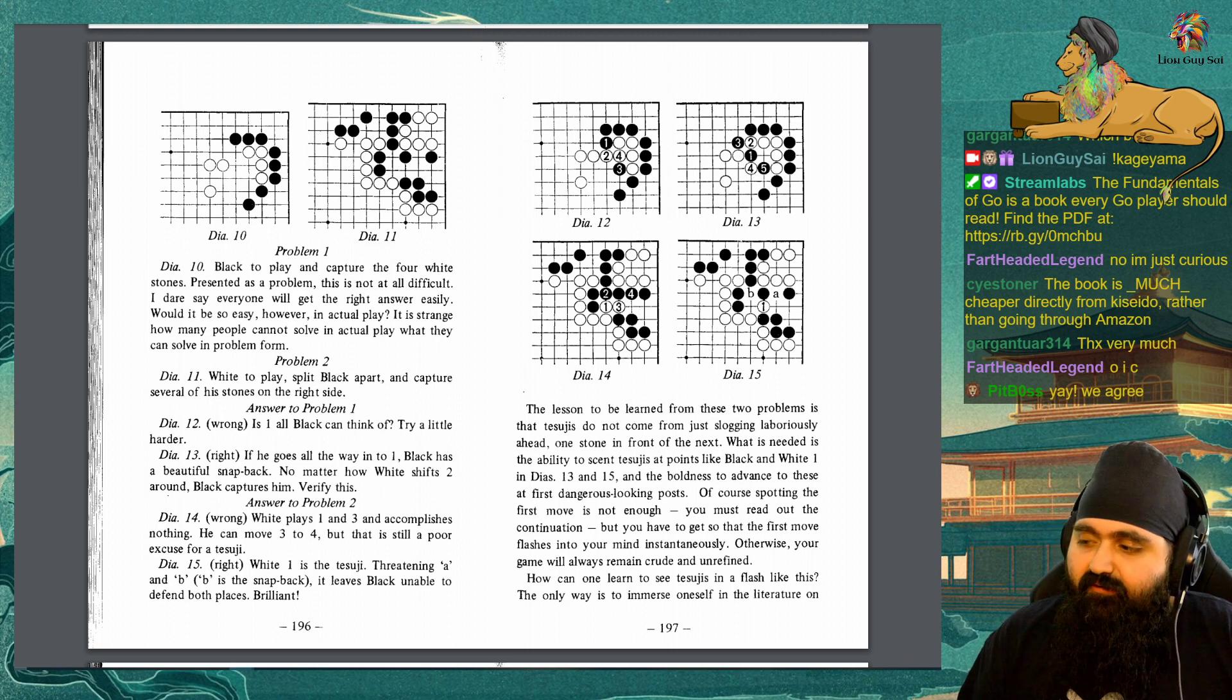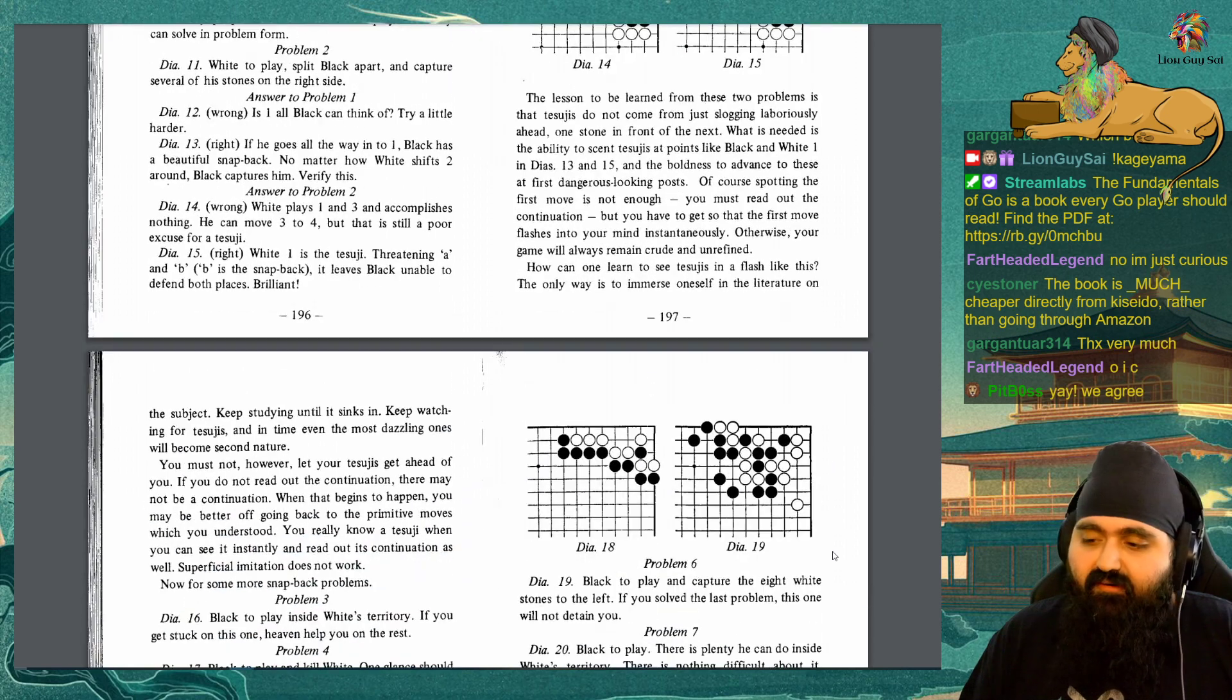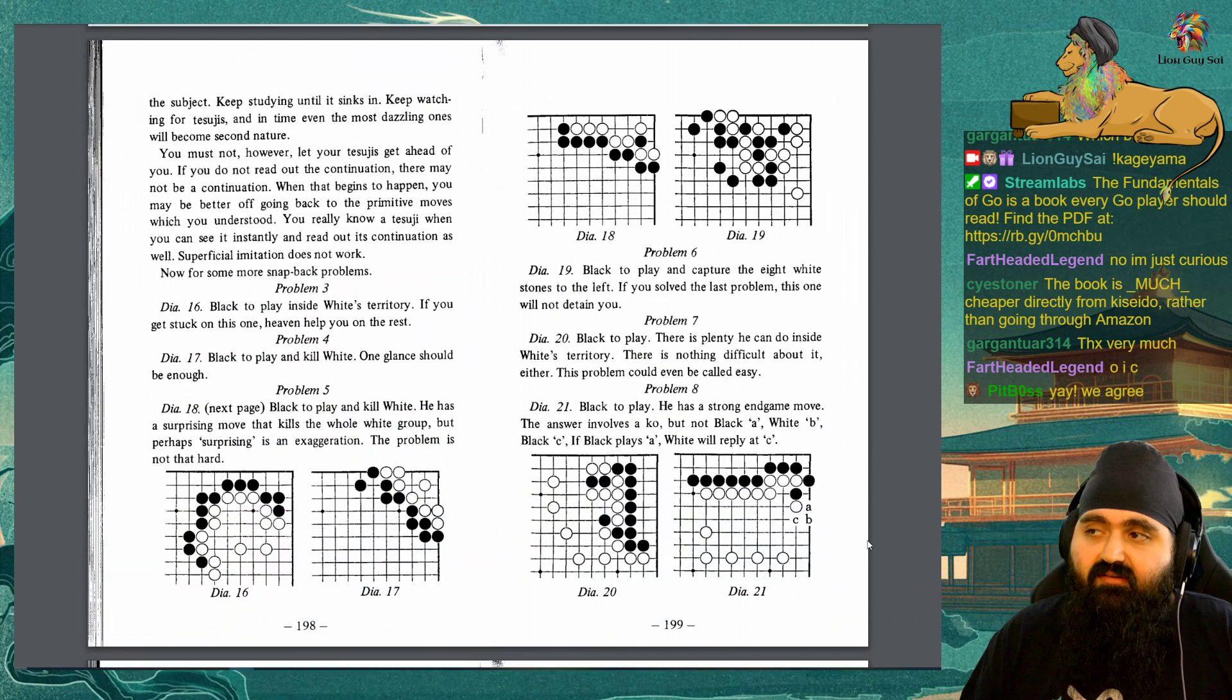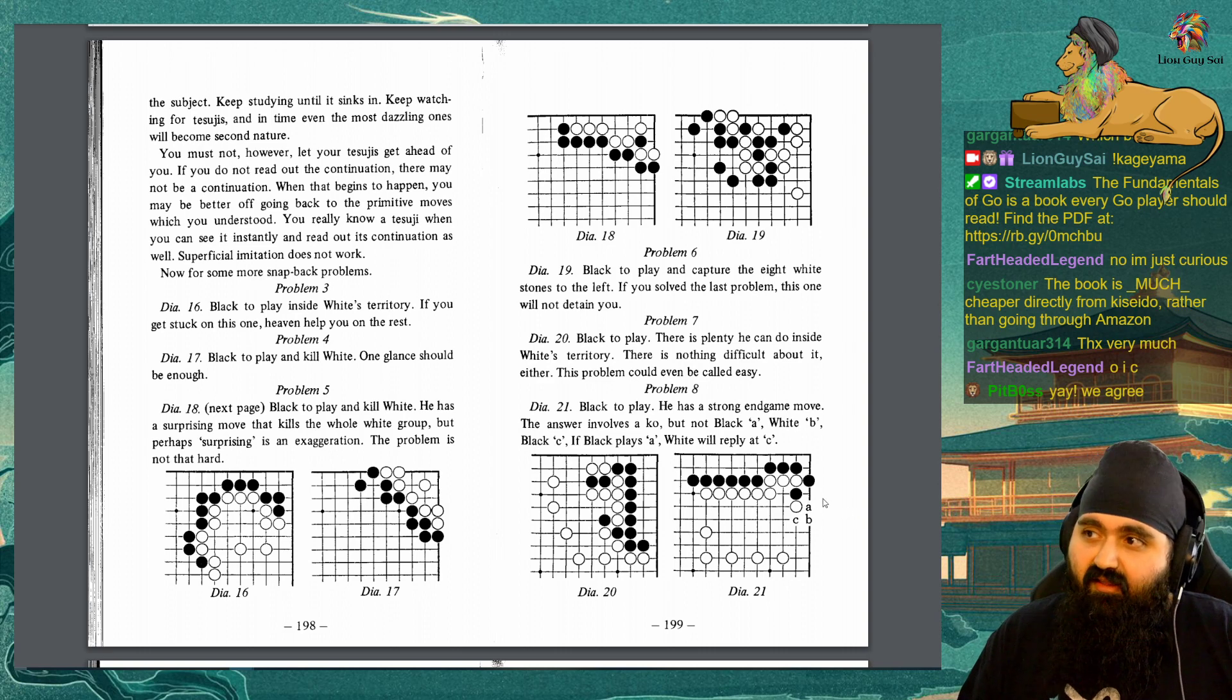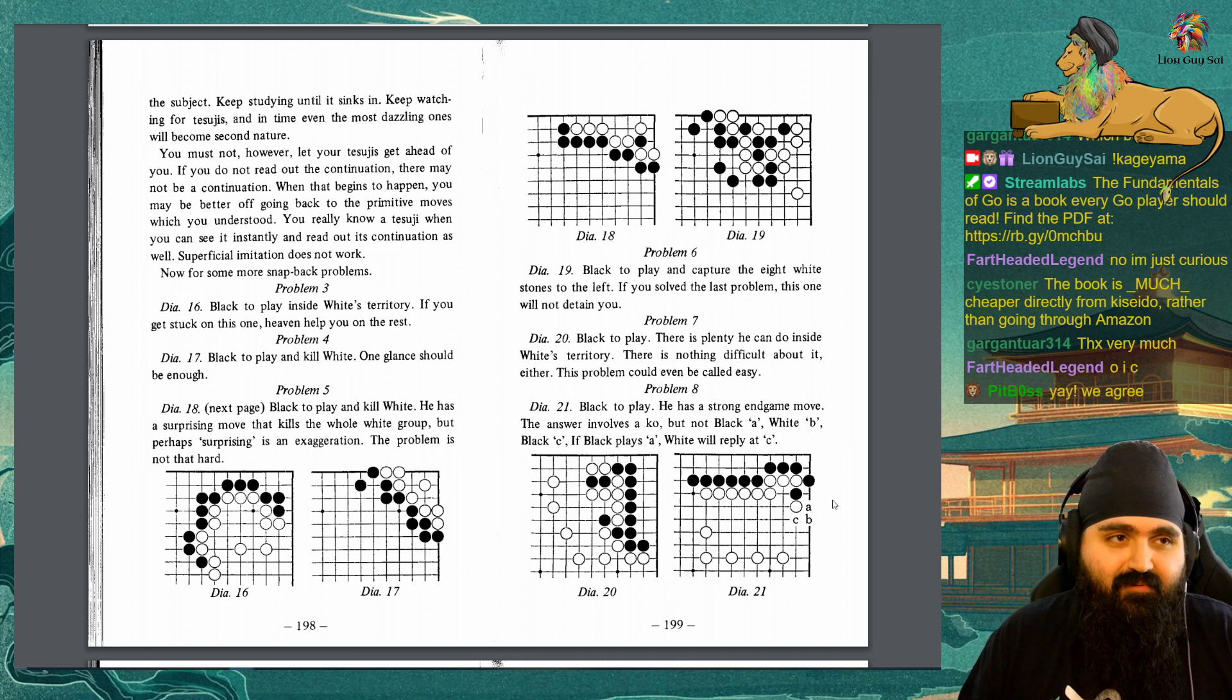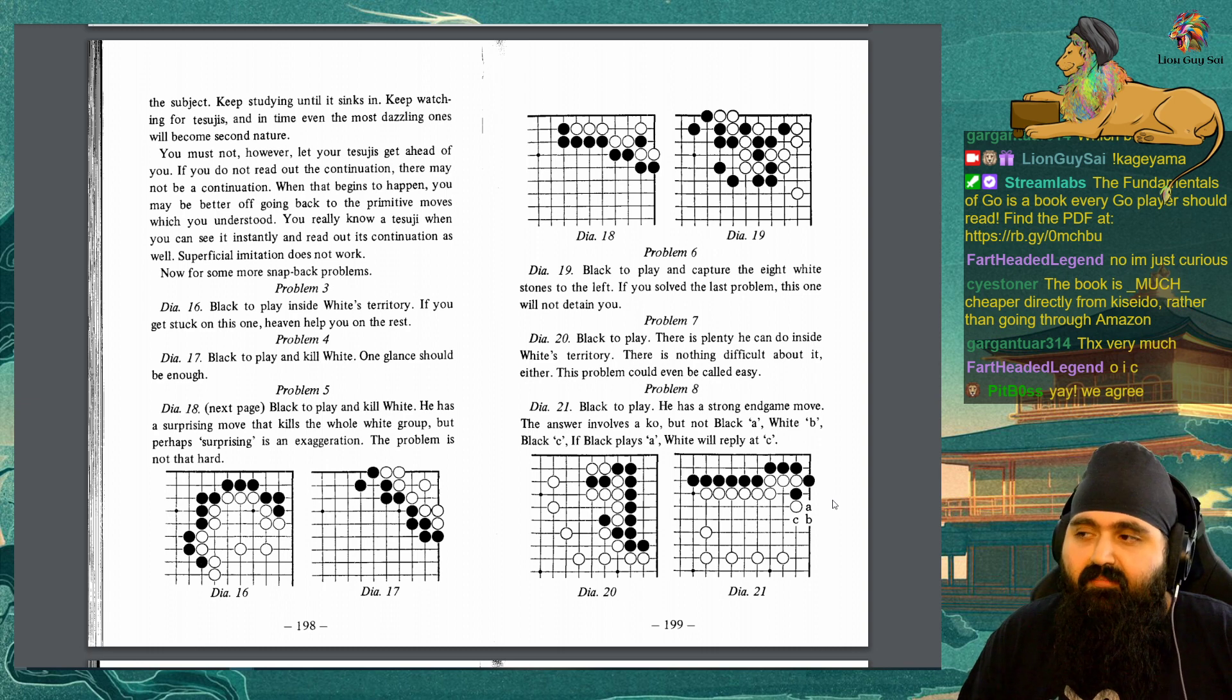What is needed is the ability to scent tesuji at points like black and white 1 in diagrams 13 and 15, and the boldness to advance to these at first dangerous looking posts. Of course spotting the first move is not enough, you must read out the continuation. But you have to get so that the first move flashes into your mind instantaneously. Otherwise your game will always remain crude and unrefined. How can one learn to see tesuji in a flash like this? The only way is to immerse oneself in the literature on the subject. Keep studying it until it sinks in. Keep watching for tesuji and in time even the most dazzling ones will become second nature.